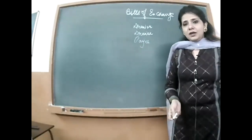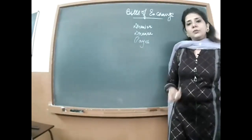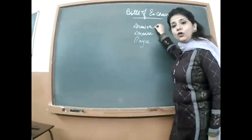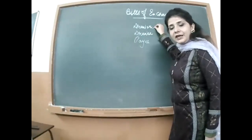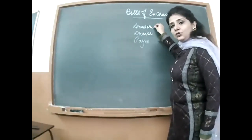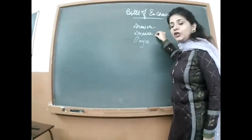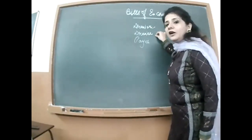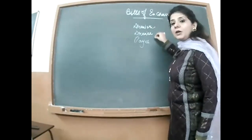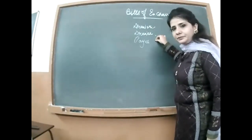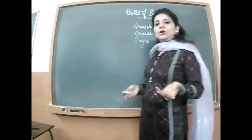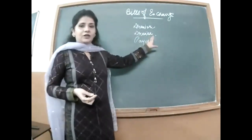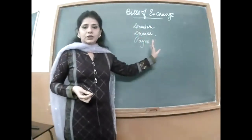We want a written promise from the buyer. That written promise ka content seller likhega, aur seller buyer ko bolega ki padhke sign kar de. Original copy seller apne paas rakhega aur uski duplicate copy drawee yaani buyer apne paas rakh sakta hai.